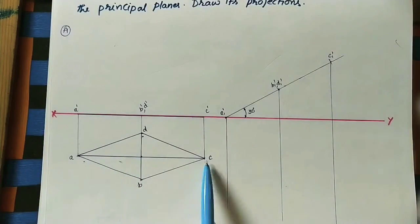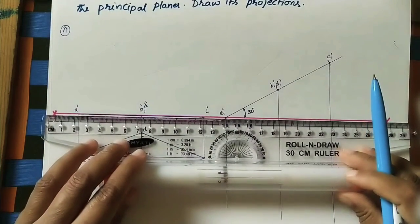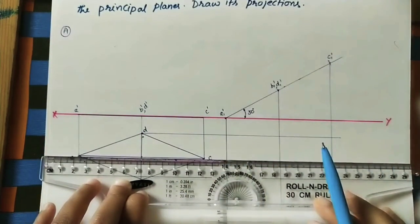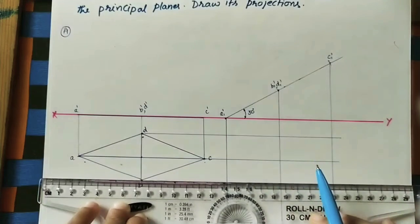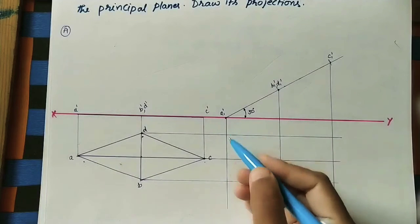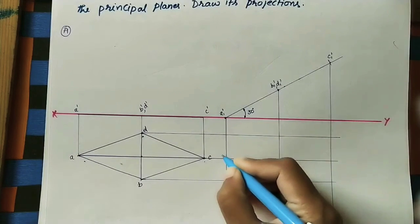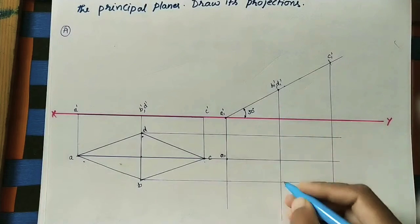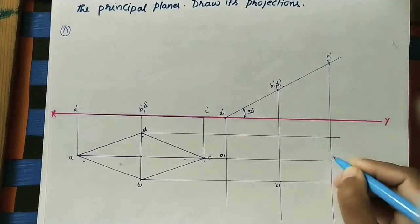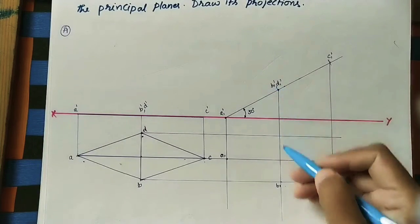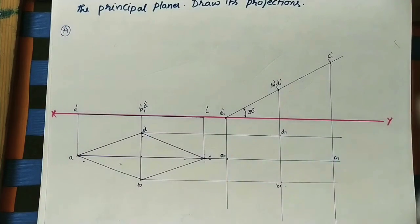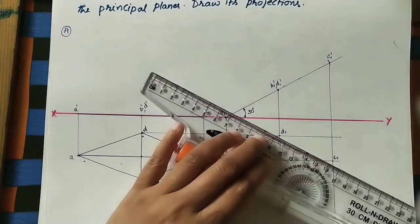From the top view, drop projector lines using the reference line. Take the intersection of horizontal and vertical projector lines: A1, B1, C1, D1 in the top view. Join all the points to get the reduced rhombus.